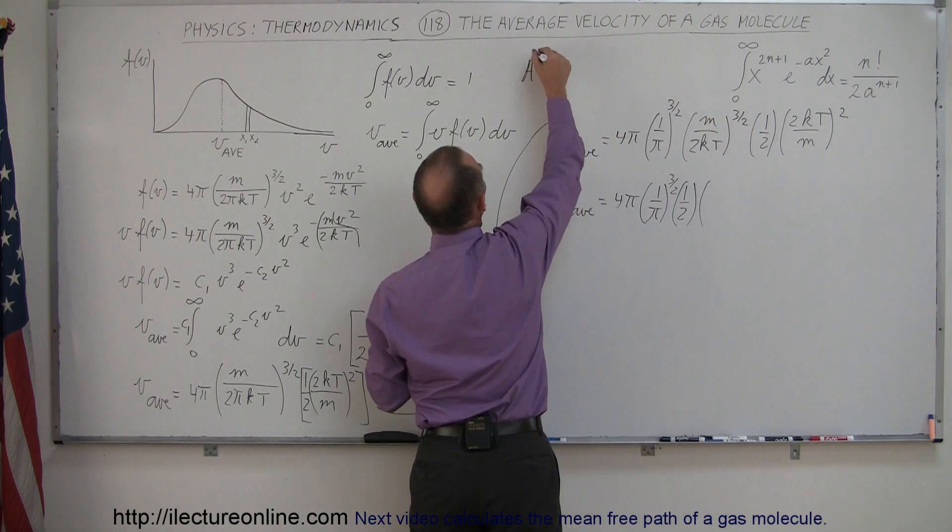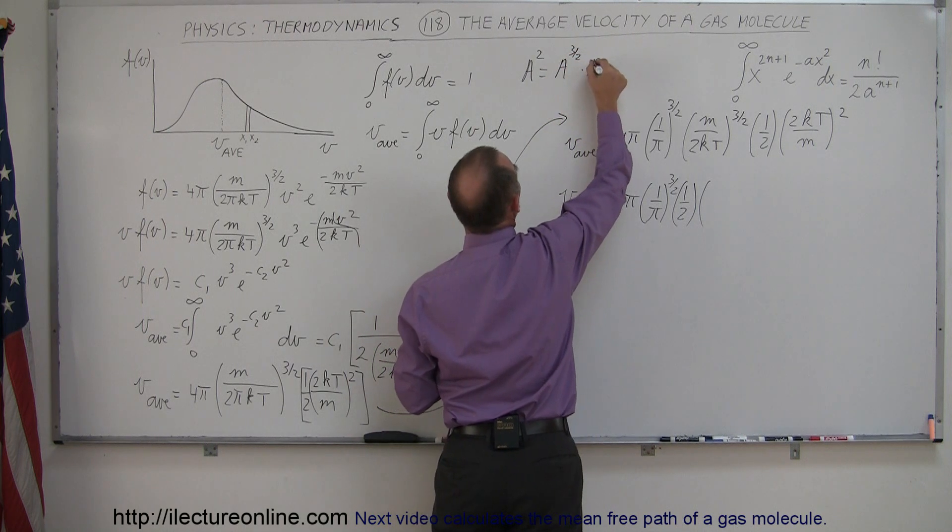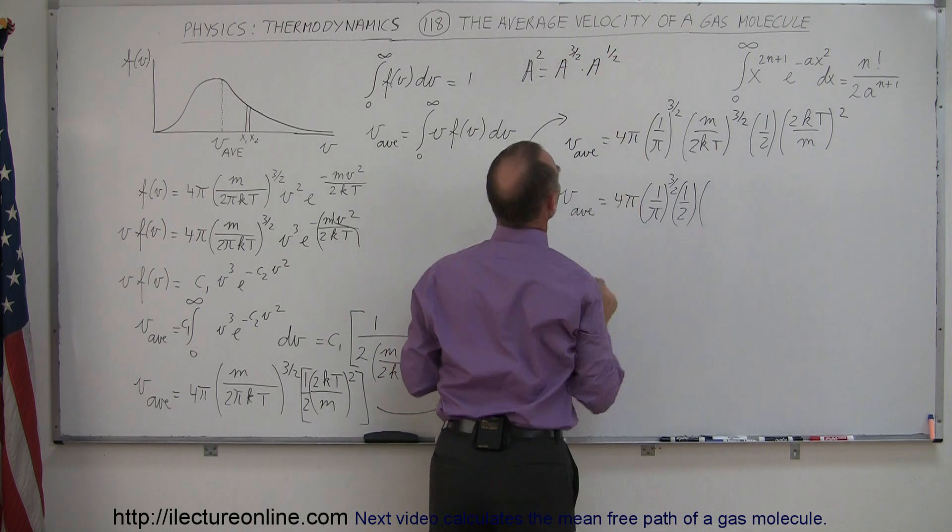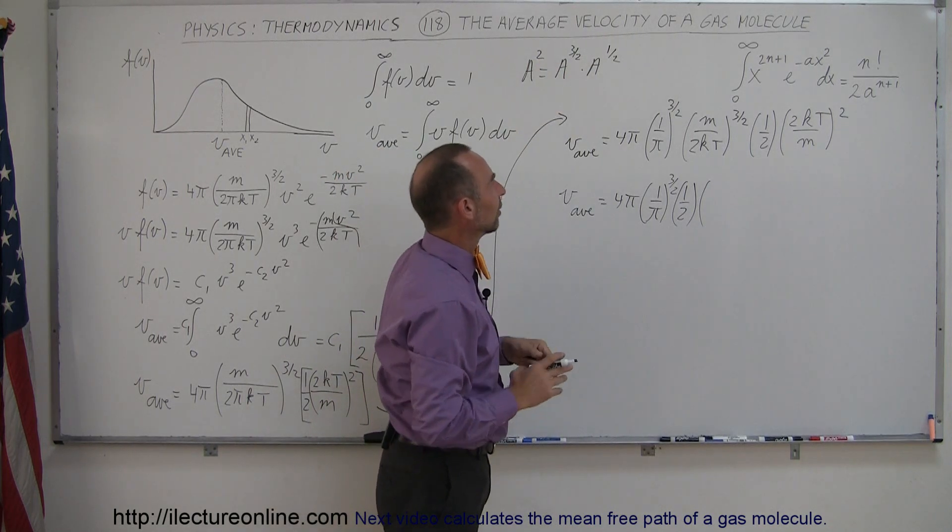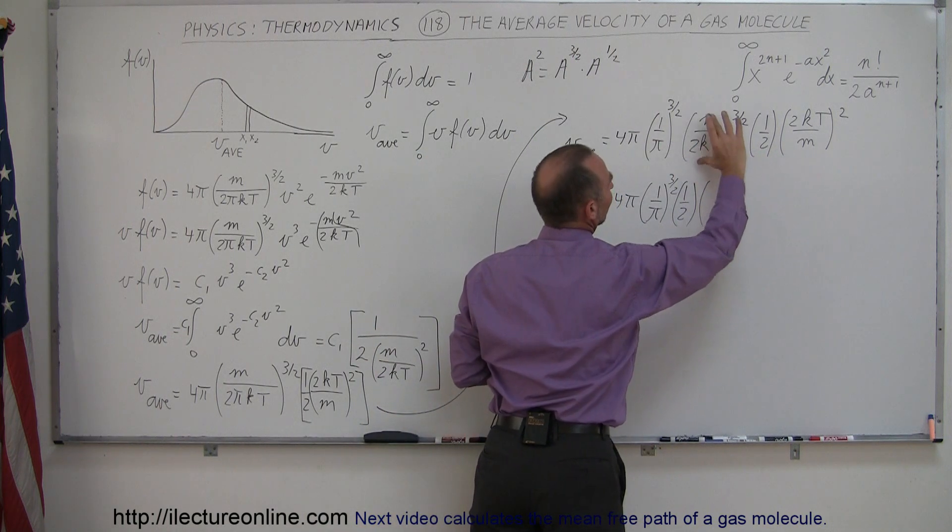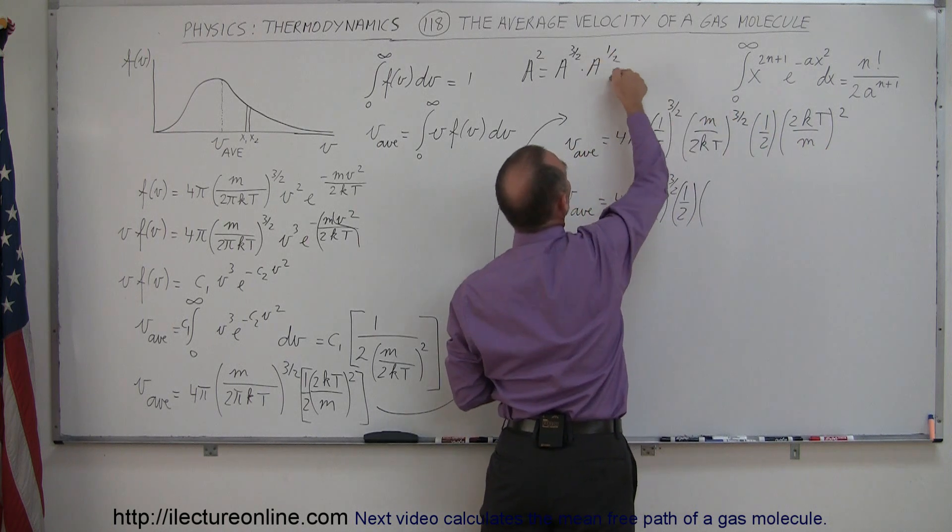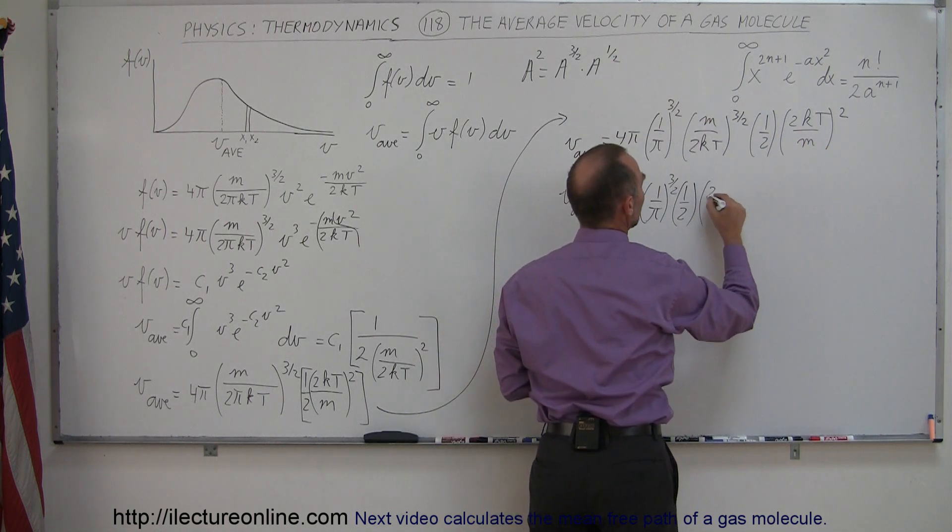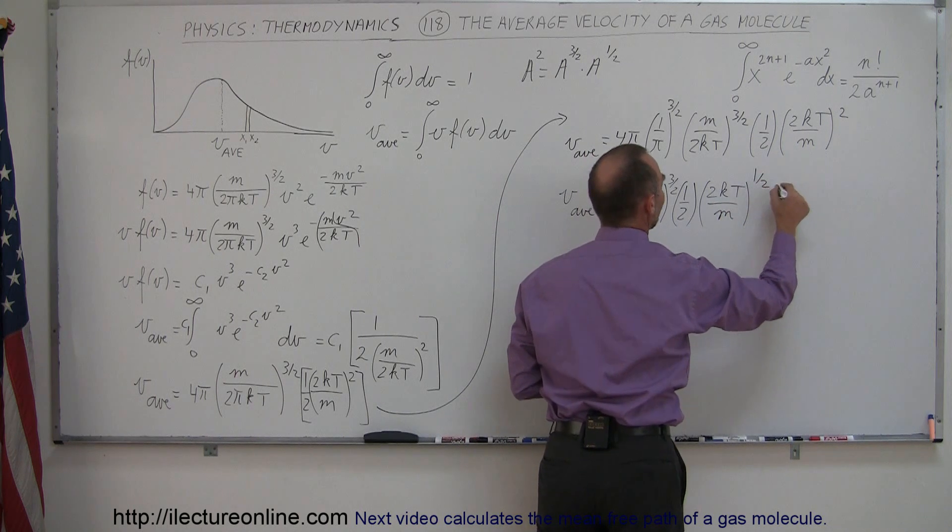So this can be written, let me explain what I'm doing here. Here you have A to the second power, this is the same as A to the 3 halves power times A to the 1 half power. There you can see when the bases are the same, I simply add exponents, I get this again. So I'm taking the A to the 3 halves power and I multiply times this. Since this is the reverse of that, they cancel each other out, and I'm simply left with this portion right here, so I'm left with 2KT over M to the 1 half power.